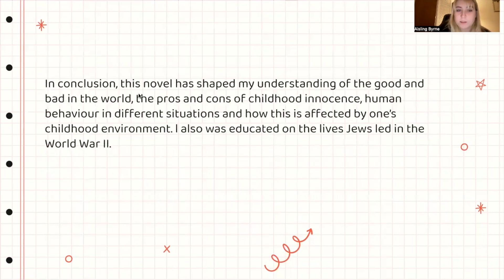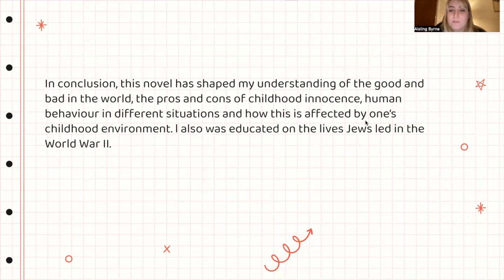'I also learned that one's positivity and imagination can be the difference between life and death. When Felix was innocent and unaware of danger he naively waved at Nazis and escaped the orphanage to find his parents. Later, more mature and cautious, he ran away when a Nazi found him in the ghetto. This taught me that innocence can create ignorance leading to dangerous situations, but it can also be a good thing — Felix would not have kept his motivation to reach the city if he hadn't held onto the idea that his parents were there. In conclusion, this novel shaped my understanding of the good and bad in the world, the pros and cons of childhood innocence, human behavior in different situations, and how this is affected by one's childhood environment.'